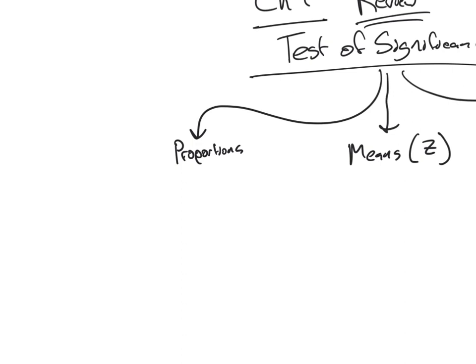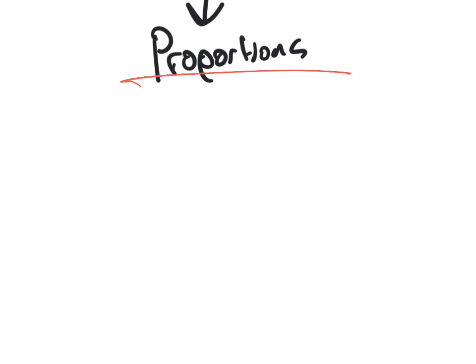So let's focus on proportions. Proportions are always a z distribution. When you go to your calculator function, you're going to find a proportion z — you will never find a proportions t. No such thing as that.